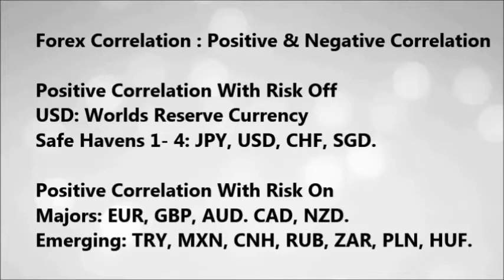AUD, CAD, and NZD are, of the majors, the ones that fare worst against the risk-off currencies. I've also listed out the emerging market currencies. A lot of people don't bother looking at emerging currencies because you get slightly wider spreads, but that doesn't matter if you're a long-term trend follower — you can very often get great opportunities in these currencies. As a group, they are the most vulnerable in terms of a move to risk off.